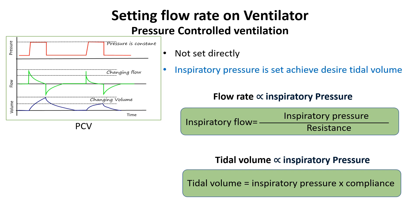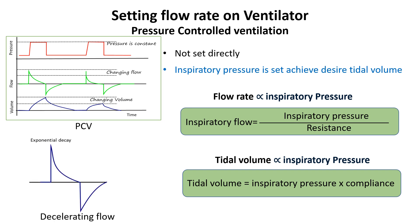The flow pattern in pressure-controlled ventilation is decelerating. Flow is driven by the pressure gradient between the ventilator and the lungs. At the start of inspiration, when the pressure difference is greatest, flow is at its peak. As the lungs fill and alveolar pressure rises, the pressure gradient decreases, leading to a progressive decline in inspiratory flow.